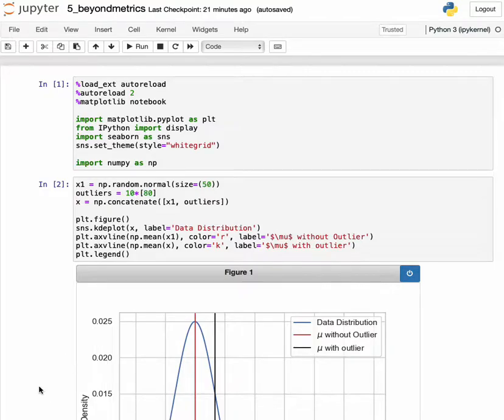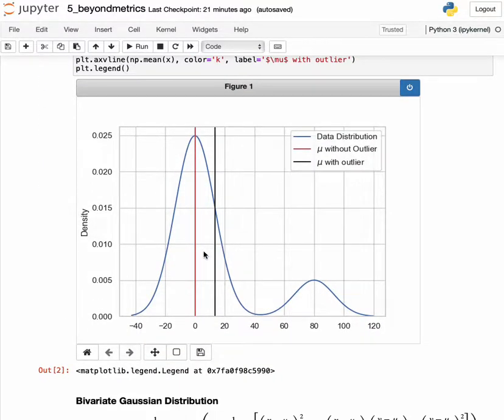For example, suppose we have the following data set here that's represented with the blue line. The blue line is a kernel density estimate of the distribution of data. Now, a one-number summary of this distribution might be the mean of the data. So we can take the mean by computing the average of all of the values that are in our sample.